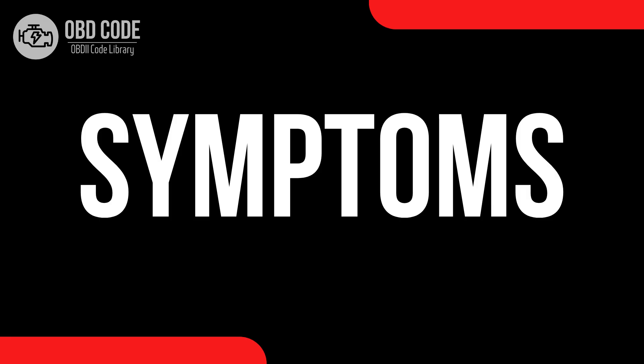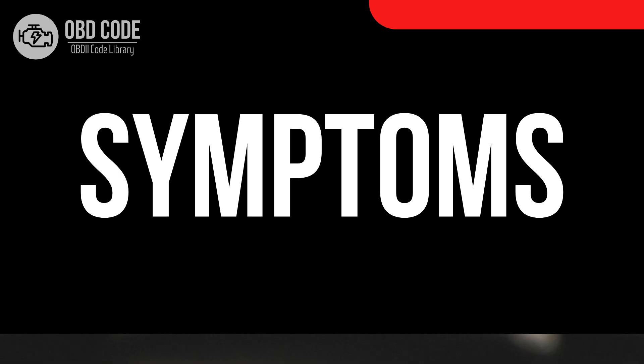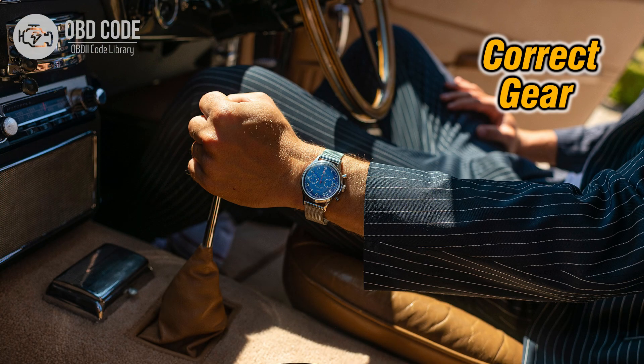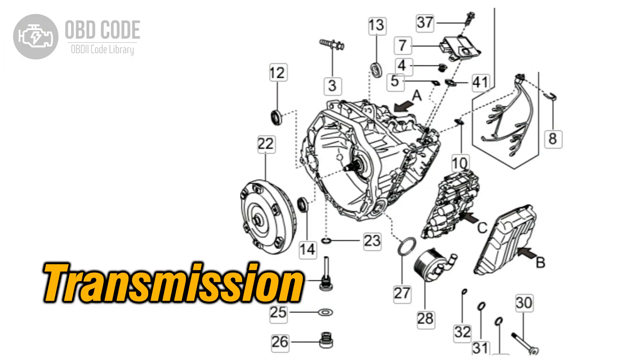Code symptoms P0792: 1. Check engine light illuminated on the dashboard. 2. Issues with shifting gears. 3. Transmission may not respond properly to driver inputs.